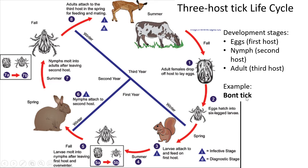The bont tick looks a little different from the bont-legged tick. The bont tick has multiple colors on the body of the tick itself — black, white, or other colors — not just on the legs. Usually the legs are one color.